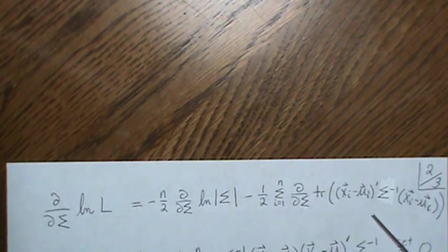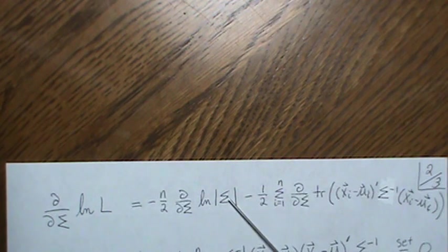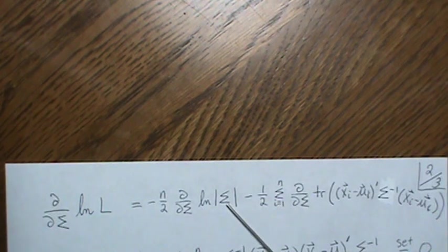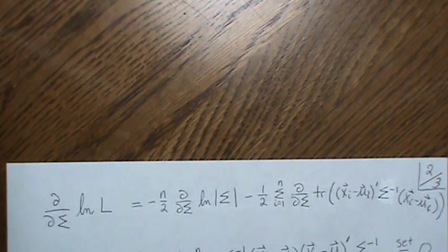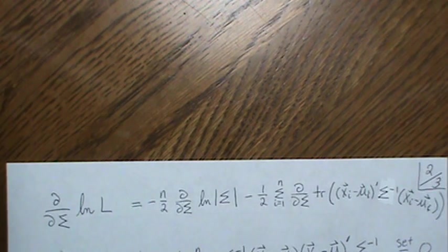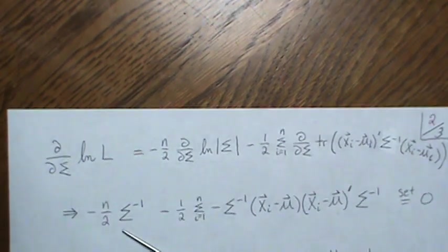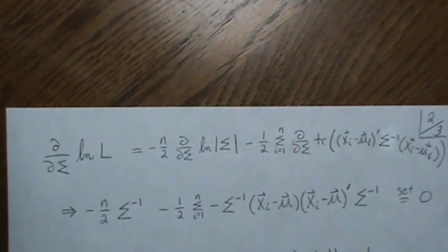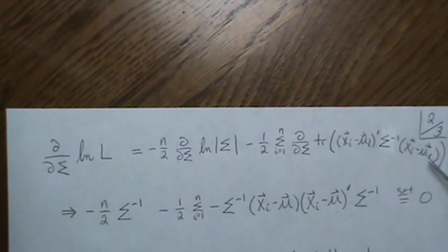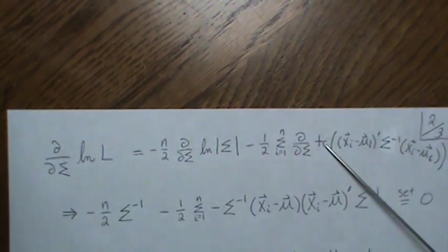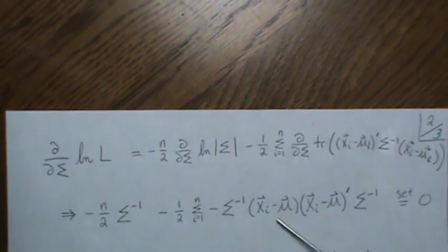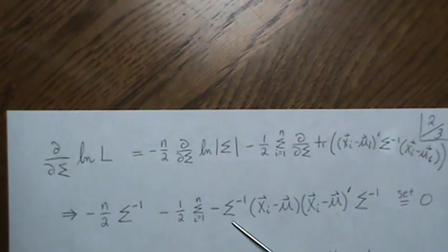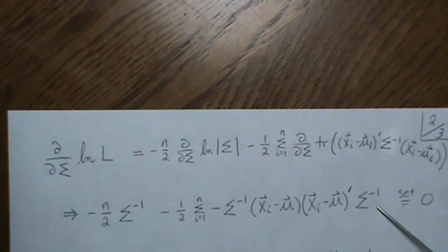So the derivative of this is one over the determinant of sigma squared times the partial of sigma with respect to the matrix sigma. This ends up being minus n over two comes out, and we're just left with this. Here, this quadratic form, the partial of this trace of the quadratic form is negative sigma inverse, the this matrix, sigma inverse.